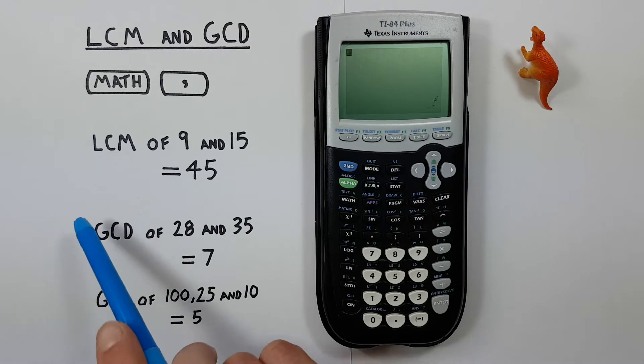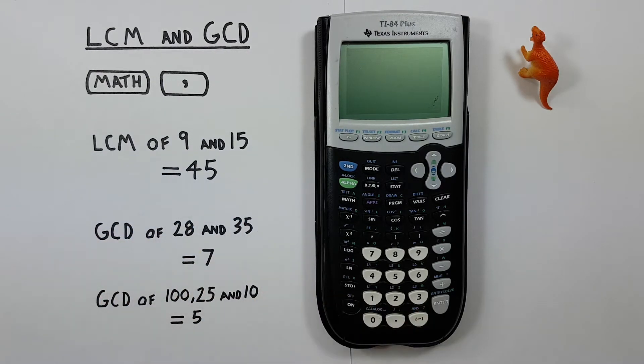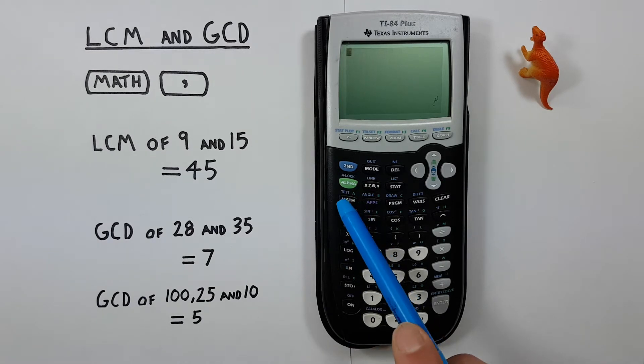Let's say we were asked to find the LCM, or least common multiple, of 9 and 15. Well, to do that, first we have to go into the math menu with the math button there.